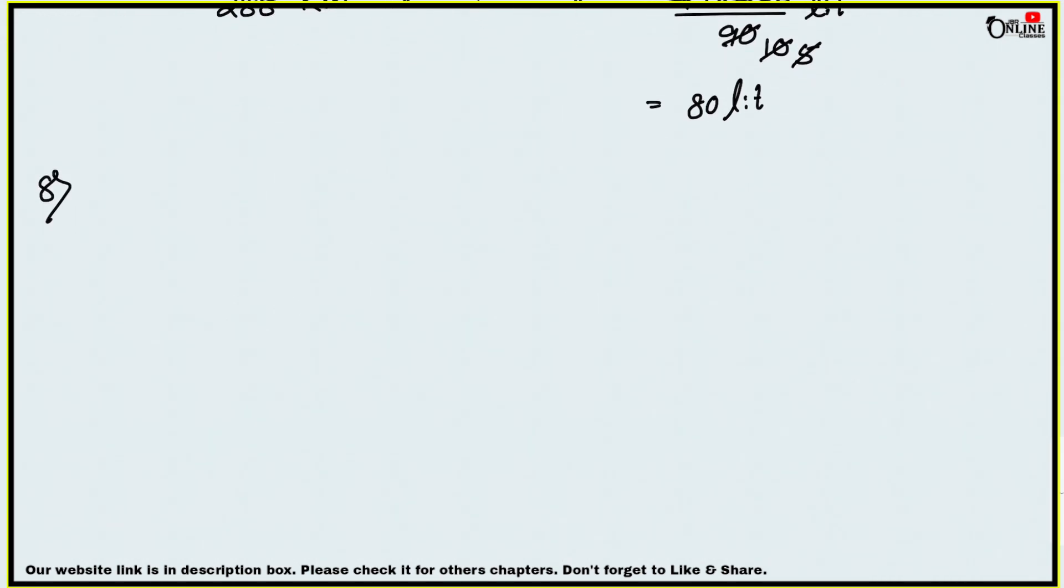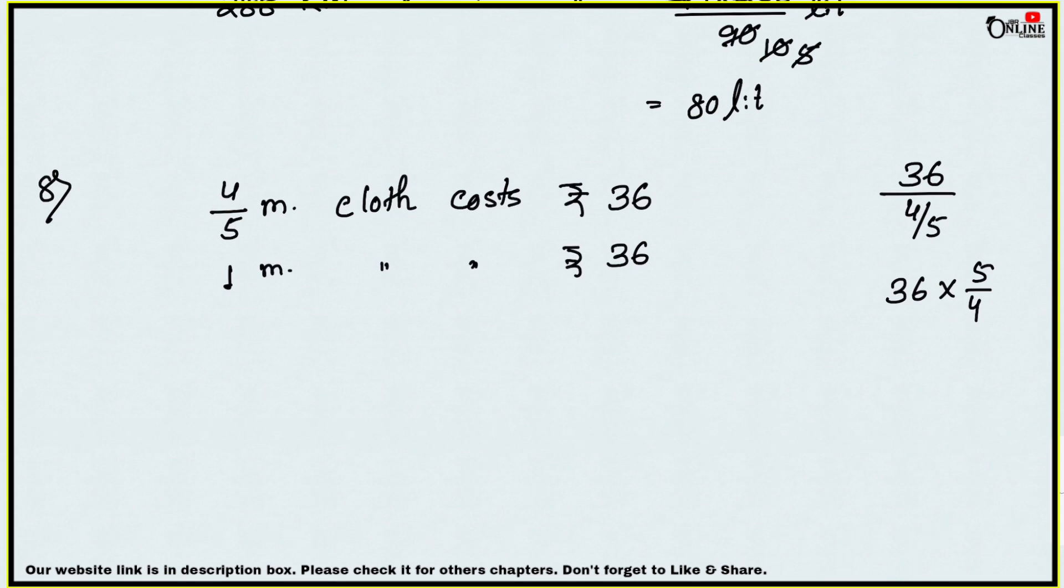Number eight: 4 by 5 meter cloth costs rupees 36. What is the cost of 11 by 5 meter cloth? 4 by 5 meter cloth costs rupees 36. 1 meter cloth costs 36 divided by 4 by 5, which is 36 into 5 by 4. 11 by 5 meter cloth costs 36 into 5 by 4 into 11 by 5. The 5s cancel out, and we get 99 rupees. That is your answer.